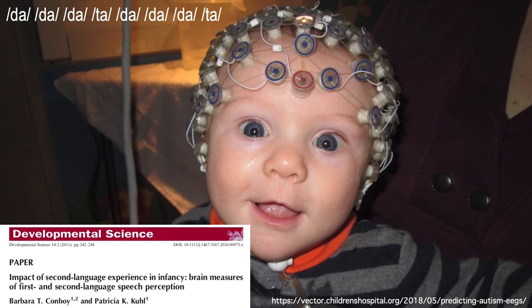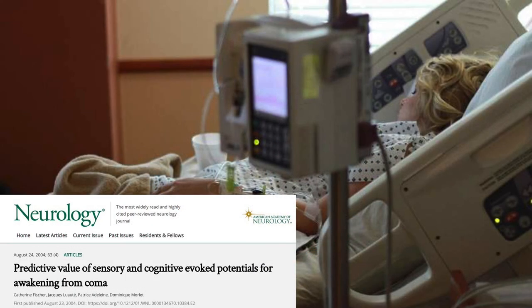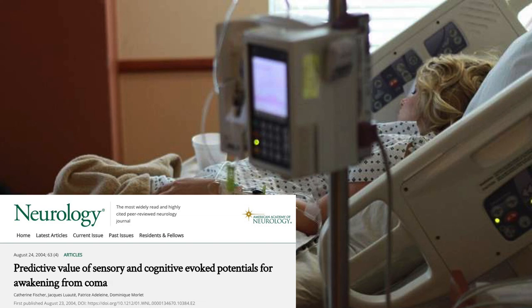Instead of using different pitches, these studies use different phonemes, like da-da-da-da-ta-da-da-da-ta-da. The MMN is also useful in a variety of patient groups — for example, it can be used to predict which coma patients will recover, and it's also widely used in schizophrenia research. Because there's no task, you don't have to worry about differential task performance as a confound. You can read more about the mismatch negativity in the chapter by Naughton and Krigepu in the Oxford Handbook of ERP Components.